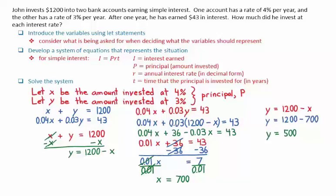Recall that x is the amount invested at 4% and y is the amount invested at 3%. We now know then that John invested $700 at 4% and $500 at 3%.